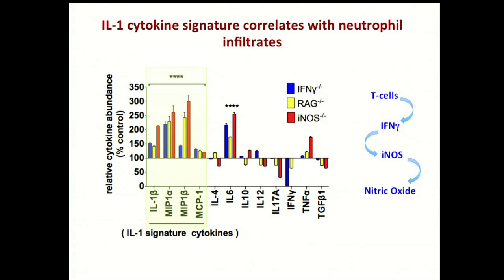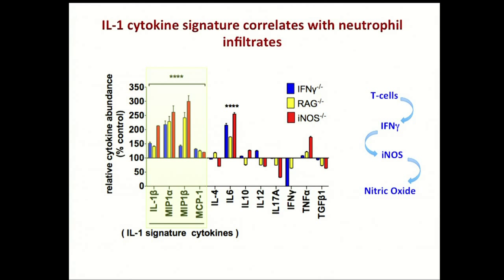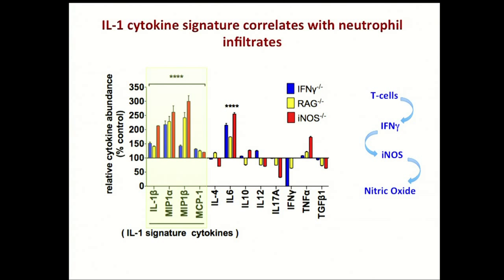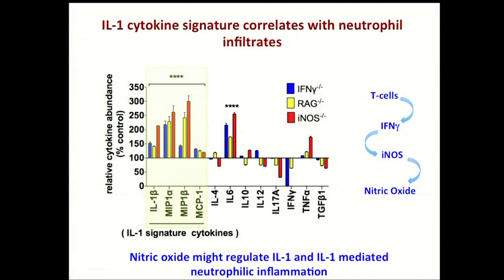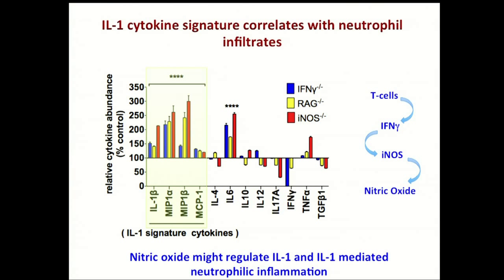T cells can produce interferon gamma and can induce nitric oxide synthase in antigen-presenting cells or different phagocytes, which can produce nitric oxide. Nitric oxide being the proximal mediator of this T cell response, we hypothesize that nitric oxide might regulate IL-1 or IL-1-mediated neutrophilic inflammation.